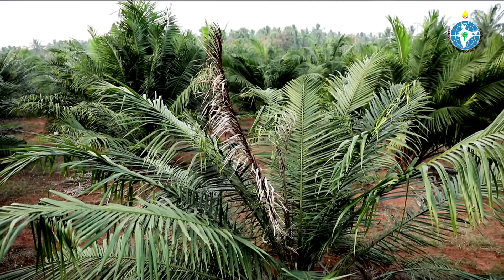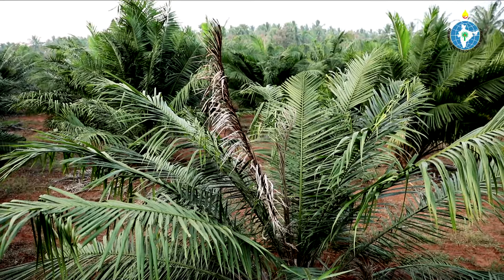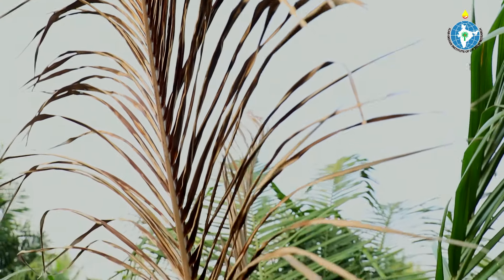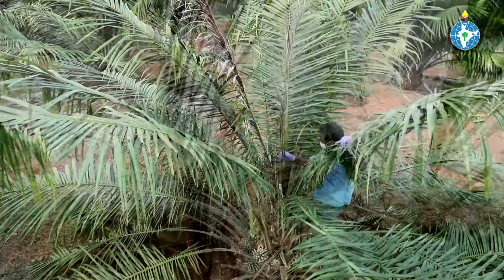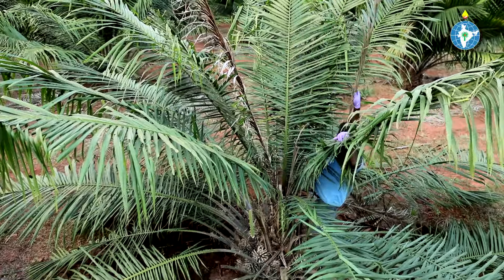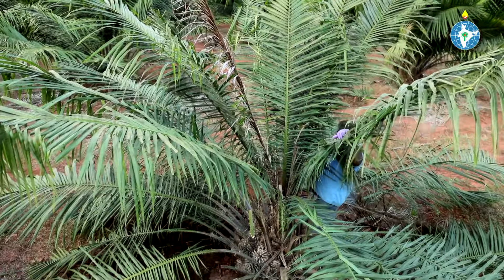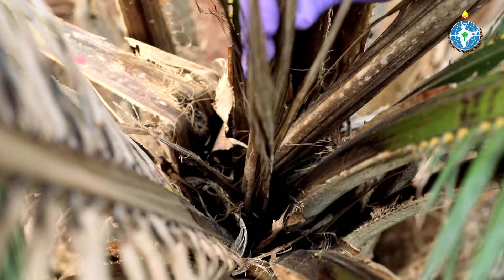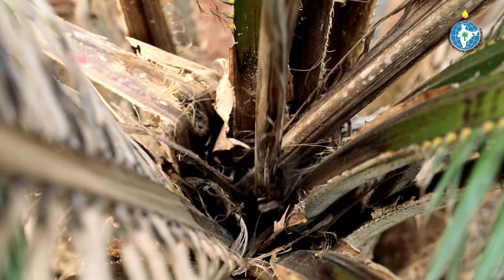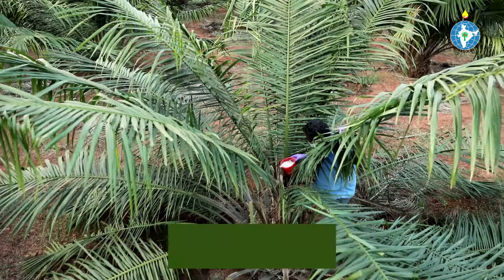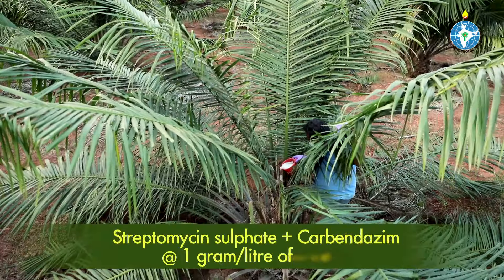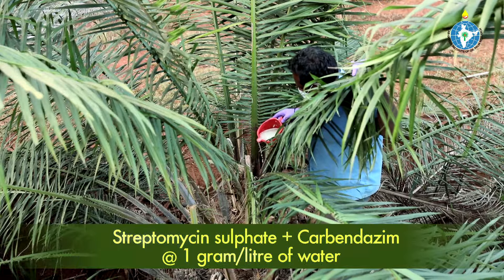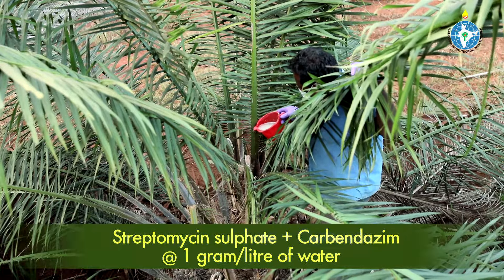Plants affected by bud rot show yellowing of spear leaves, subsequently turning to brown. The spear then collapses and can be easily pulled out. To control this disease, affected tissues in the crown are removed and drenched with 0.1% solution of Streptomycin Sulphate plus Carbendazim.